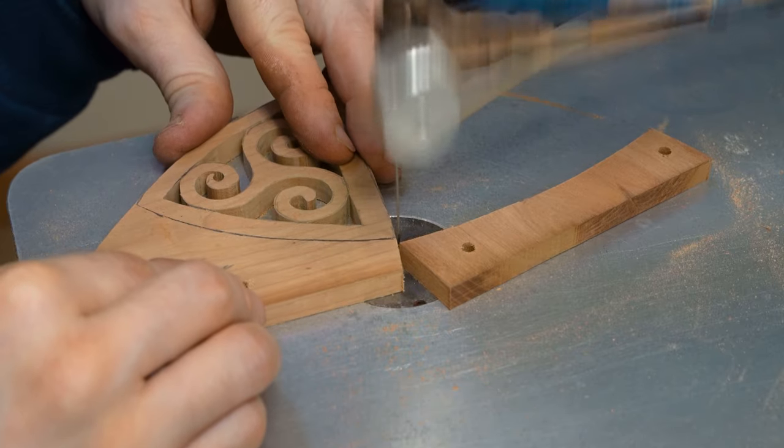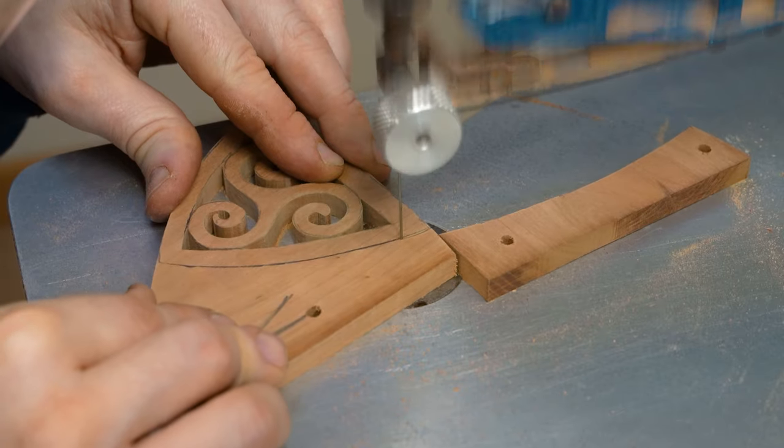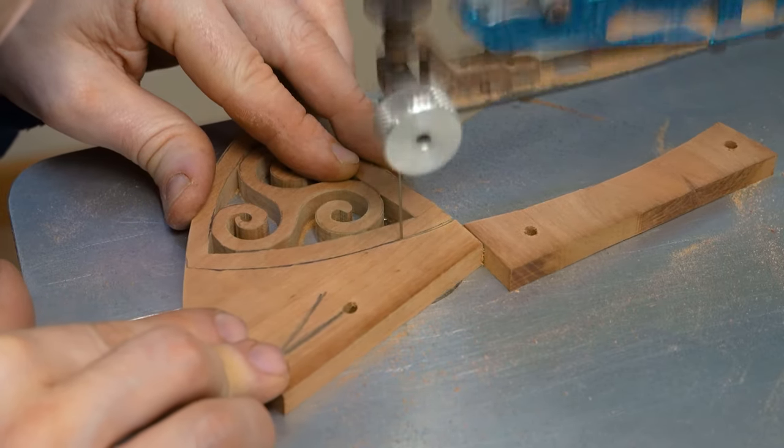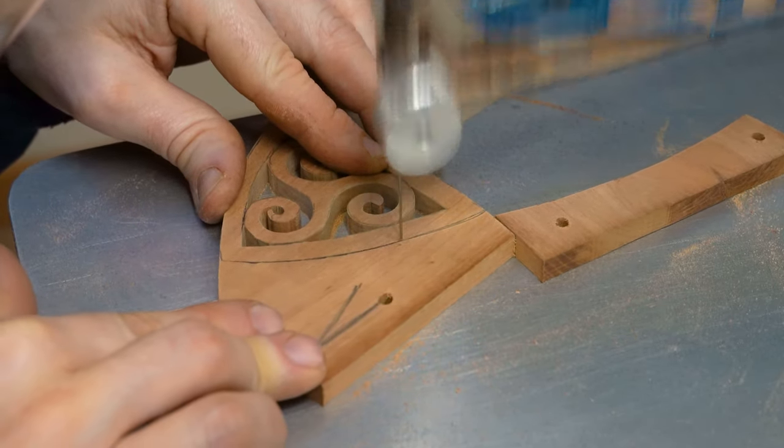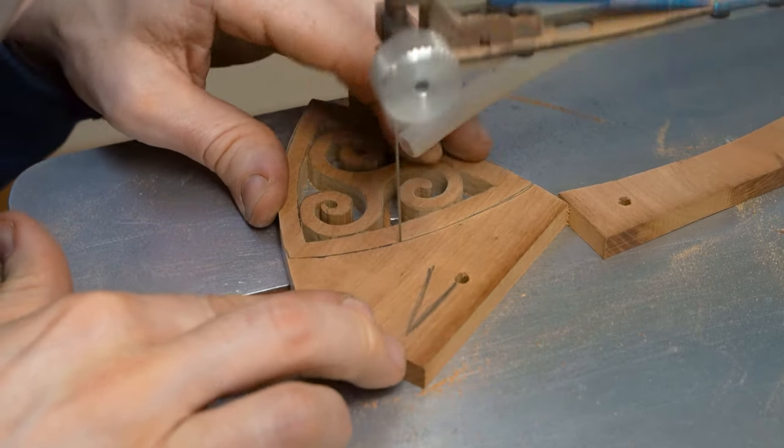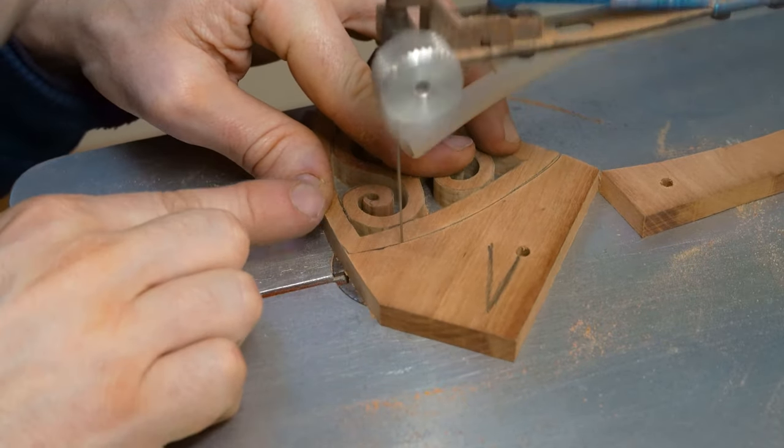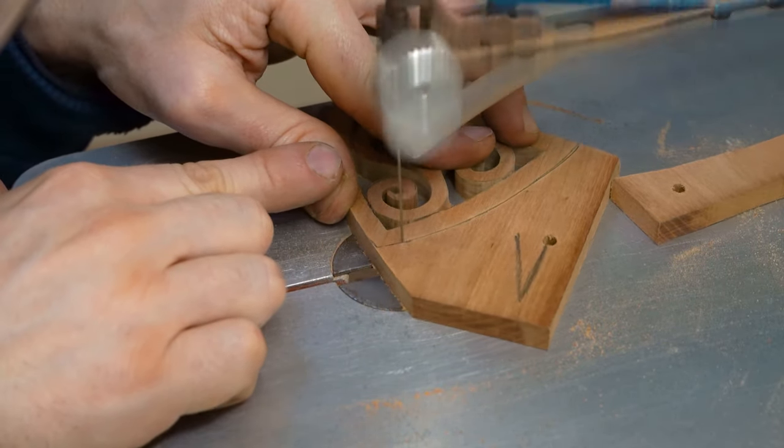You may be watching this and thinking, why are you using these techniques? So for example, a scroll saw, you can turn the blade right the way around very sharply. And that's true.